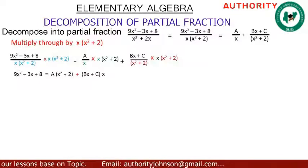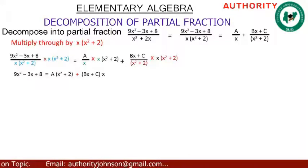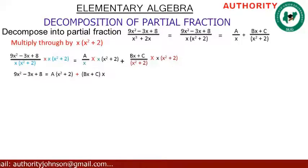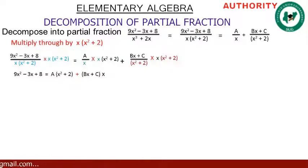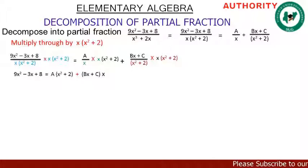After cancellation we are left with: 9x² - 3x + 8 = A(x² + 2) + (Bx + C)·x.